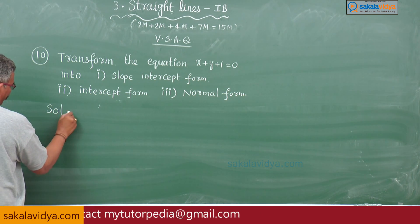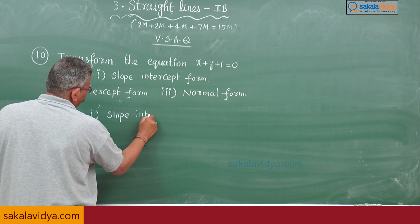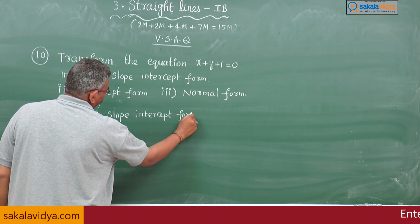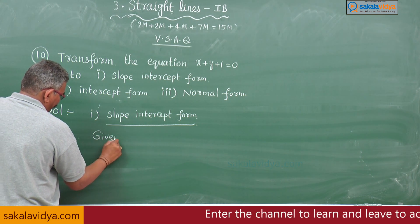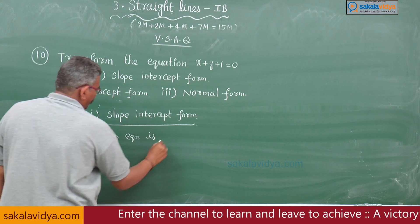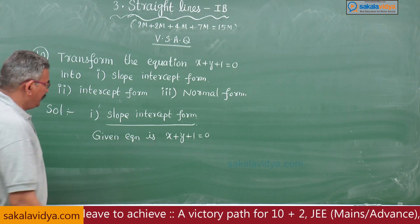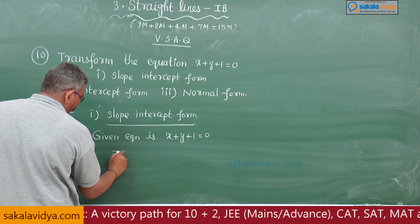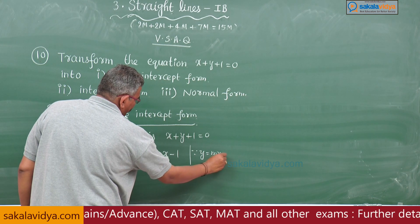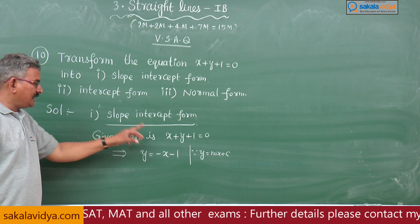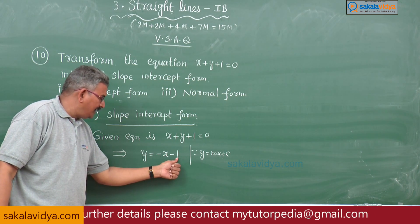First, slope-intercept form. The given equation of the line is x plus y plus 1 is equal to 0. We have to write this as a function of y. So that implies y is equal to minus x minus 1. This is in the form y is equal to mx plus c, which is the slope-intercept form. The slope is minus 1 and the y-intercept is minus 1.